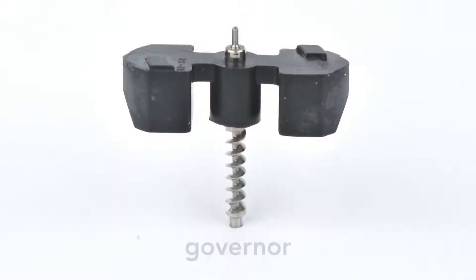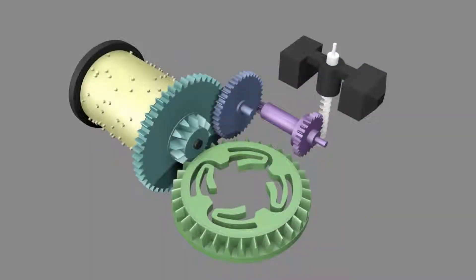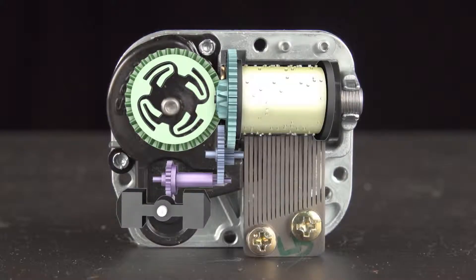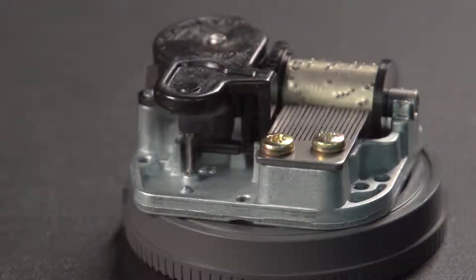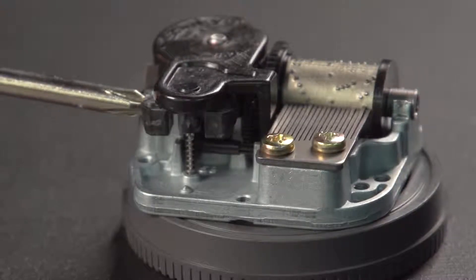This piece, called the Governor, solves this problem. It's connected to the drum by a gear train. The gear train is compactly built into the music box. The rotation of the governor controls the speed. Stop the governor and the drum stops.